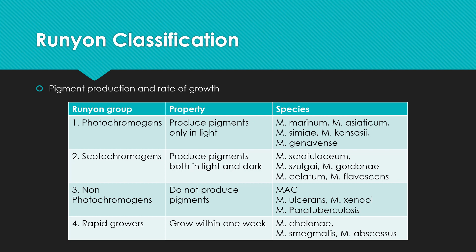The fourth group is Rapid Growers, meaning they can grow within one week. The important member of this group is M. chelonae.